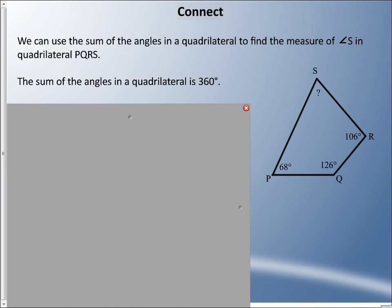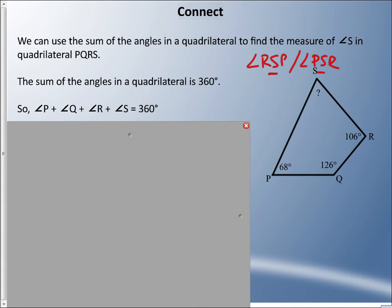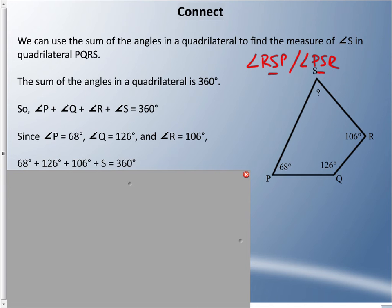So knowing what I know, can I figure this out, angle S? I could have put angle PSR or RSP—that is the exact same thing. Angle P plus angle Q plus angle R plus angle S equals 360 degrees. Since P is 68 degrees, angle Q is 126 degrees, angle R is 106, let's add those all together.